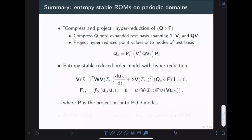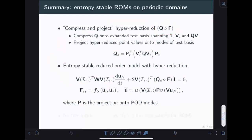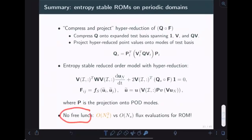In summary, we have a two-step compress-and-project hyperreduction of the Hadamard product nonlinear term. Plugging this into our formulation yields a reduced-order model that is entropy-conservative or entropy-stable with appropriate dissipation. One caveat: this entropy-conservative ROM can be more expensive than the full-order model under specific circumstances because we introduce more flux evaluations due to sparsity loss — I'll go into this a little later.